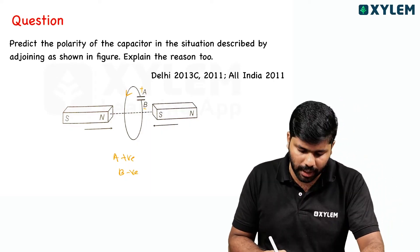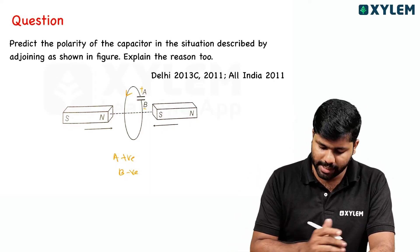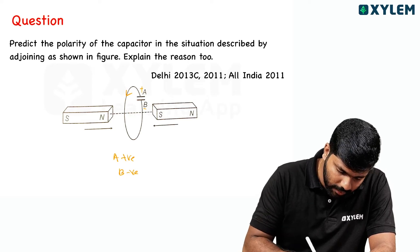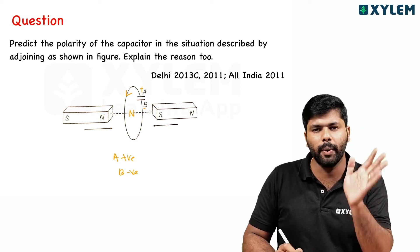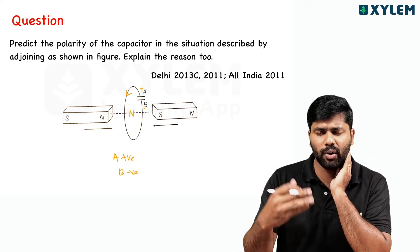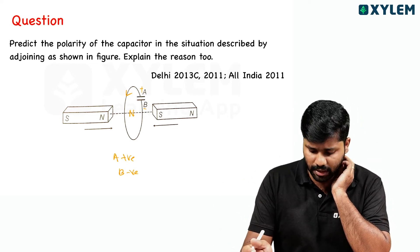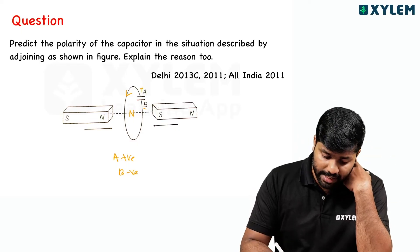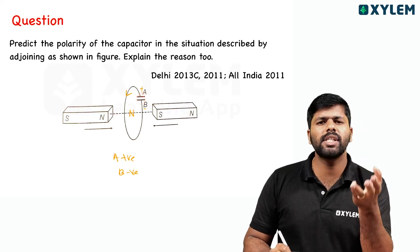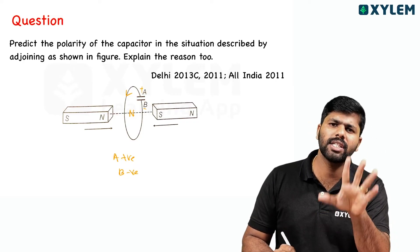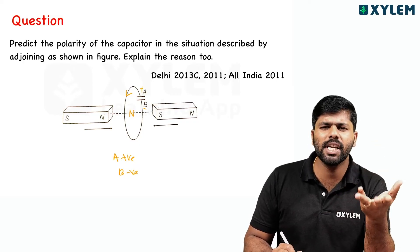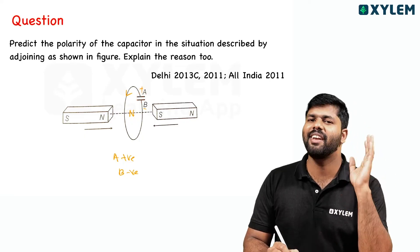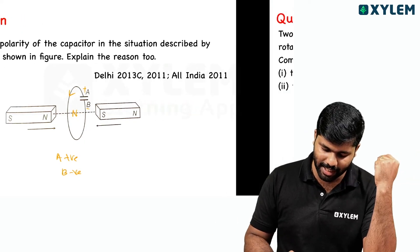On the facing side, a north pole is developed, meaning current flows anti-clockwise on that side and clockwise on the other side. Which means A will be positive and B will be negative. So the capacitor polarity is: A positive and B negative.